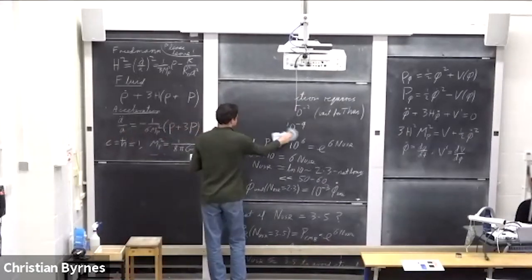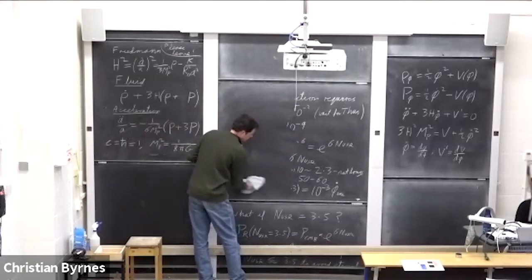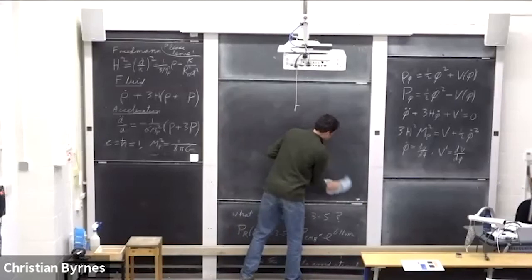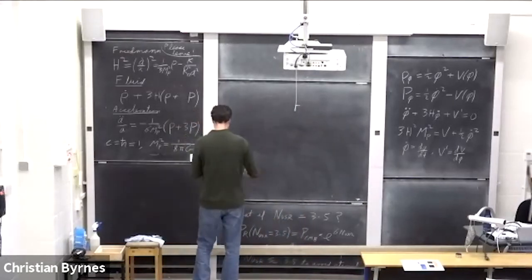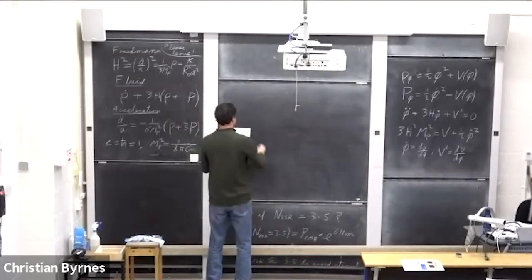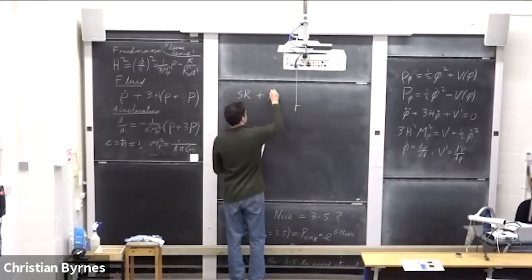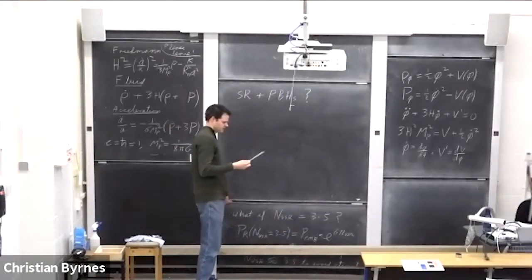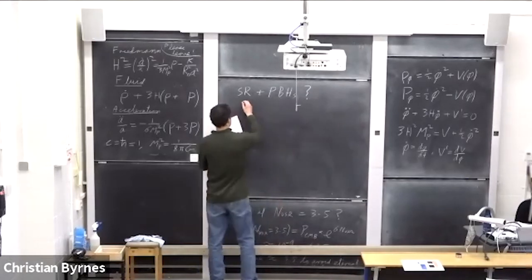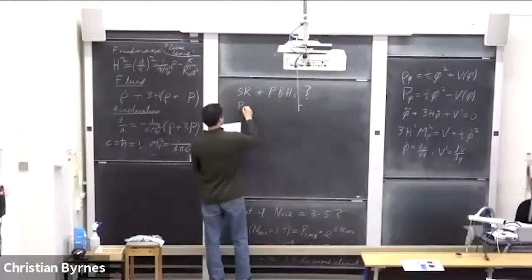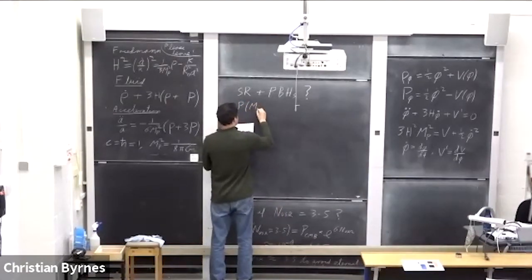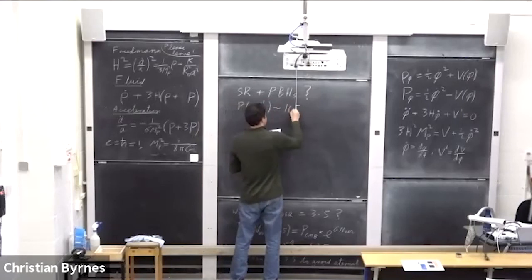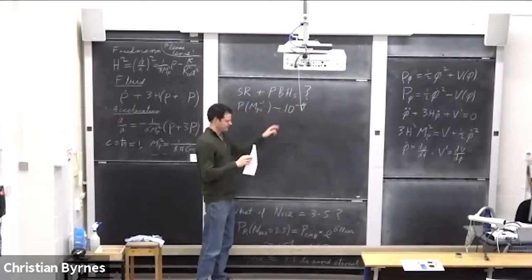Slow roll plus primordial black holes: we need to be consistent that the power spectrum on mega-parsec inverse scales or larger should be 10 to the minus 9 — just to order of magnitude. It's really 2 times 10 to the minus 9, but that's the constraint from CMB and large scale structure observations.